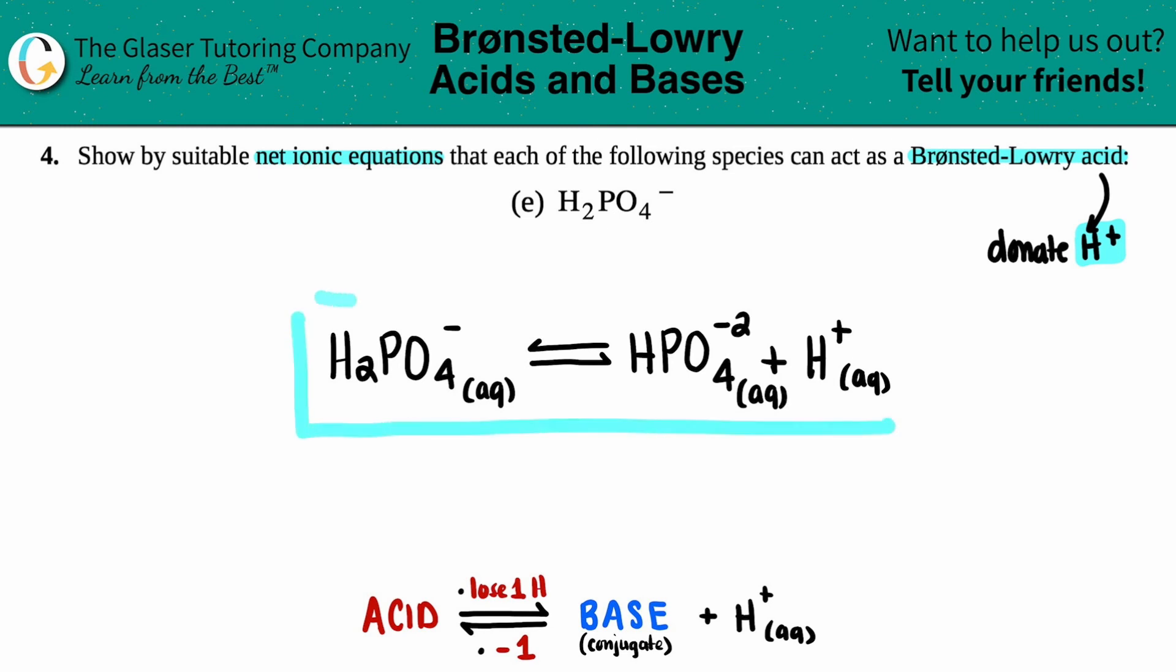That's how you write that net ionic equation showing that H2PO4 minus is a Brønsted-Lowry acid. And there you go, guys.